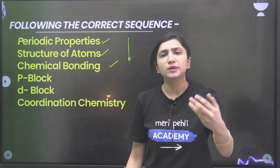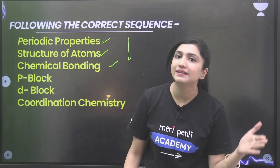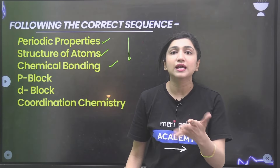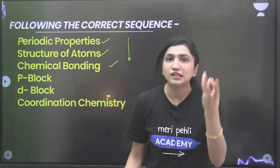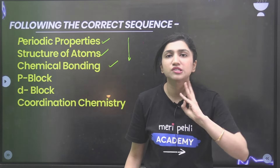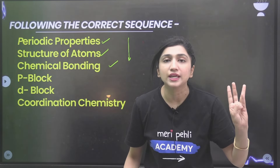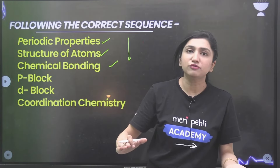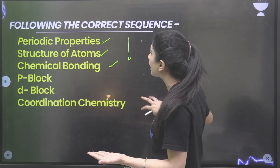Like periodic properties — there are so many trends. Every property has exceptions, across S-block, P-block, and D-block. If you cover periodic properties well and then move to P-block, D-block, and chemical bonding, you won't need to separately memorize hybridization or trends from scratch, because you've already built that base. You will feel very comfortable if you have a good command on these topics.